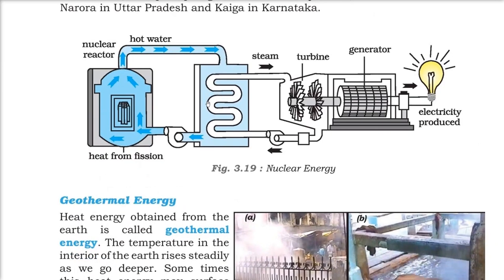Here is how nuclear energy is produced: nuclear fission generates heat, which is used to heat water and produce steam. This steam rotates a turbine that is attached to a generator, and this generator produces electricity.